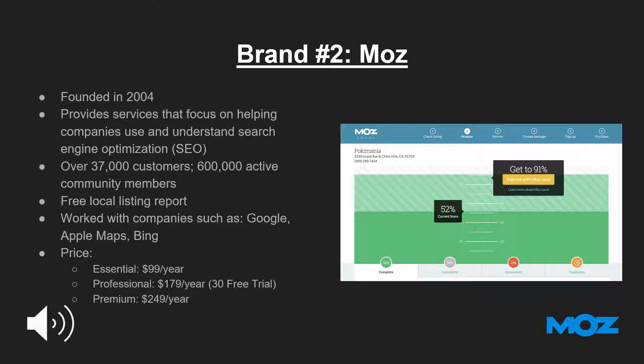Pricing for Moz's services is categorized into three sections: Essential, Professional, and Premium. Essential is the basic package for small to medium-sized businesses, priced at $99 per year. Professional is their most popular product, best suited for agencies or enterprises, priced at $179 per year. Moz also provides a free 30-day trial. Their Premium product runs at $249 per year and is best suited for large agencies or enterprises with at least 100 listings.